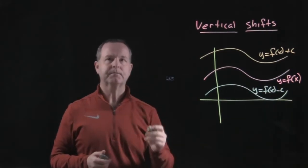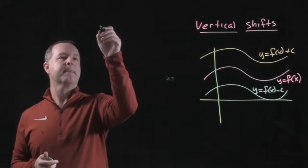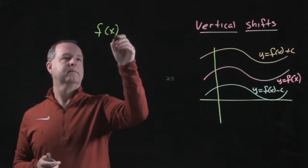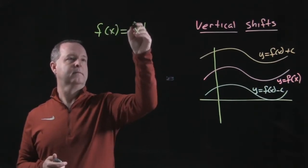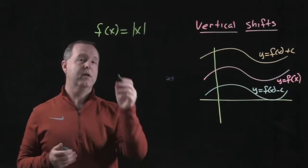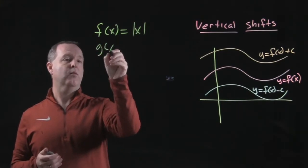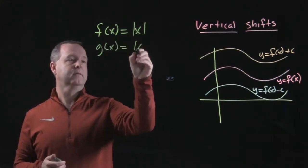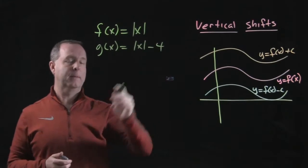So let's take, for example, a function, the absolute value function. And I want to look at what does a shift look like with that function? G of x.